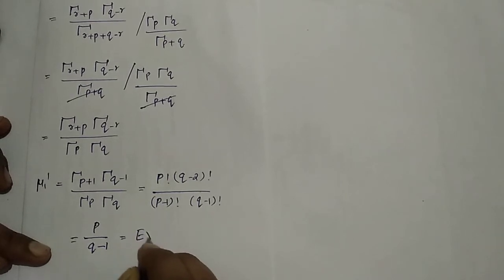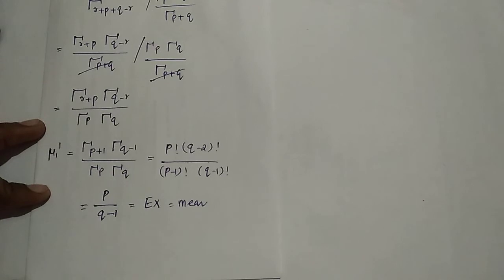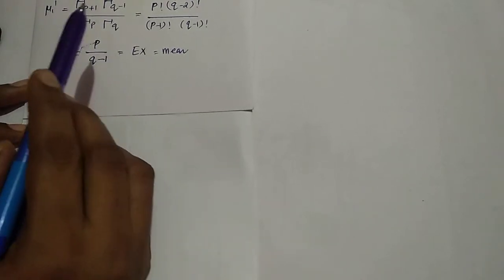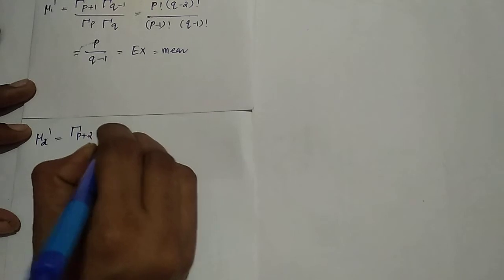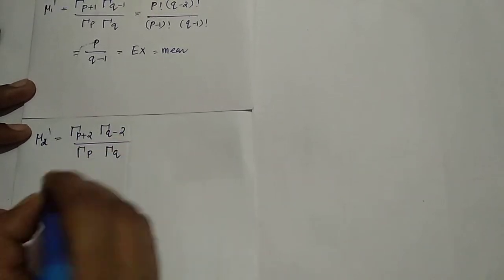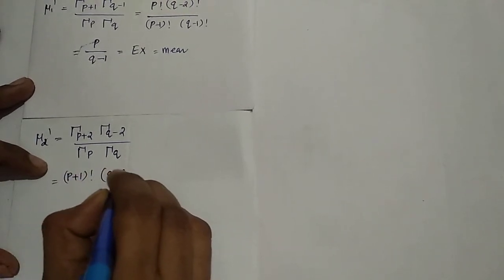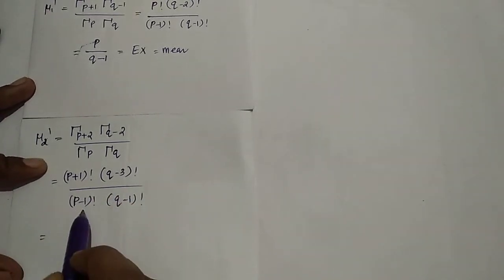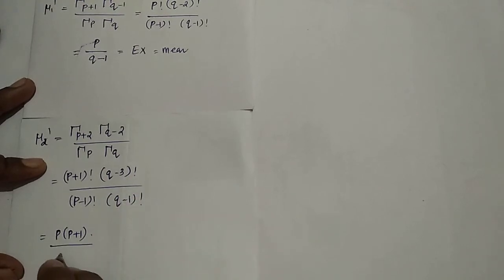For μ'₂, put r = 2: μ'₂ = Γ(p+2)·Γ(q-2) / [Γ(p)·Γ(q)] = (p+1)!·(q-3)! / [(p-1)!·(q-1)!] = p(p+1) / [(q-2)(q-1)].